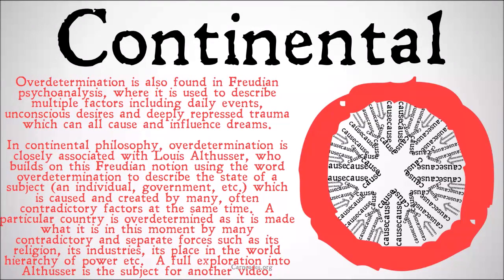In continental philosophy, over-determination is closely associated with Louis Althusser, who builds on this Freudian notion, using the word over-determination to describe the state of a subject — an individual, a government, etc. — which is caused and created by many often contradictory factors at the same time. A particular country is over-determined as it's made what it is in this moment by many contradictory and separate forces, such as its religion, its industries, its place in the world, hierarchy of power, etc. There's no one easy sufficient cause to explain what caused China or what caused America — it has to be over-determined by so many different, separate, often contradictory causes coming together.